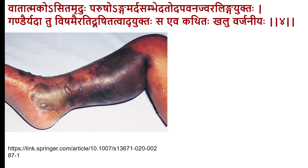In the Vata-ja variety of Visarpa, there is a black, soft swelling. The surface tends to become rough, and there may be Sambheda — disruption of tissue — or severe pain typical of Vata. Occasionally there are localized bulgings, blebs, or swellings. The irregular surface characterizes the Vata-ja Visarpa.